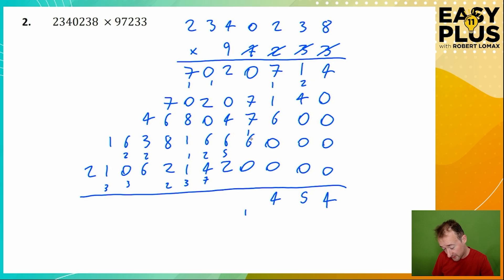2 7s are 14, plus 6 is 20, plus the 1, 21. 2 plus 4 is 6, plus 6 is 12, plus 2 is 14, plus the 2, 16.